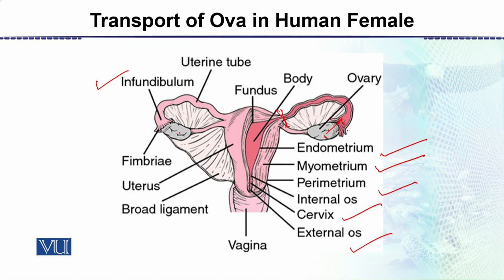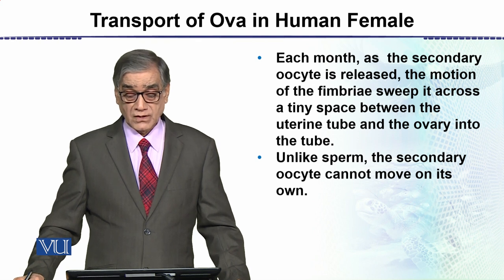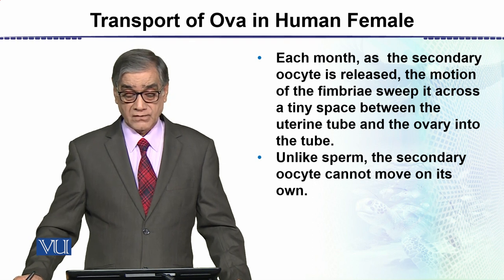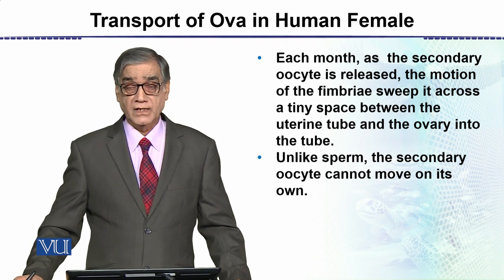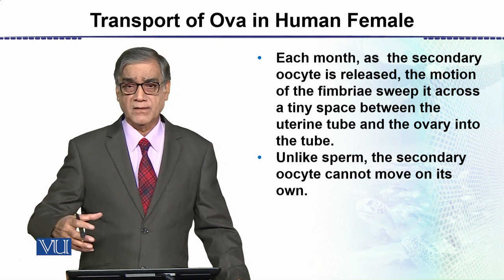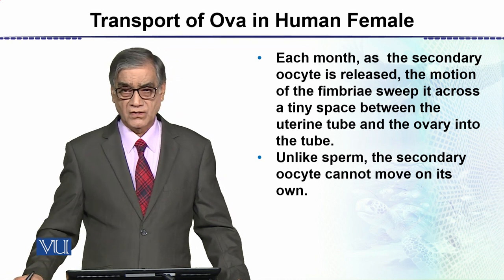Next is the vagina which has the vaginal opening. Now each month as the secondary oocyte is released, the motion of the fimbria sweeps it across a tiny space between the uterine tube and the ovary into the tube. یہ ہم discuss کر چکے کہ fimbria یہی کام کرتے ہیں اور اس tube کے اندر secondary oocyte آ جاتا ہے۔